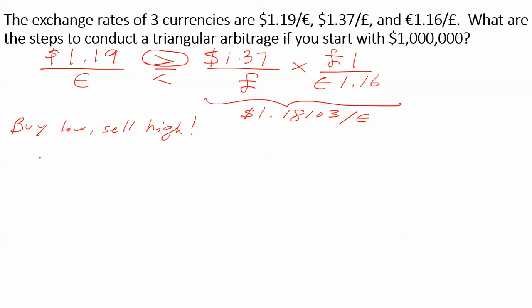So we will sell dollars for pounds, $1 million times the exchange rate for pounds. So I'm going to flip the exchange rate so that the dollars will cancel out and I'll have pounds in the end. And that will give me 729,927.01 pounds.